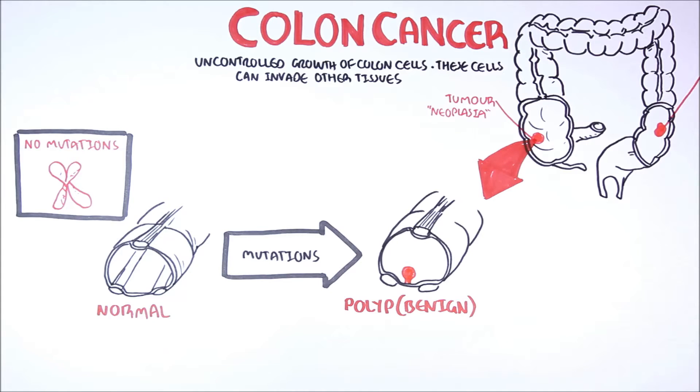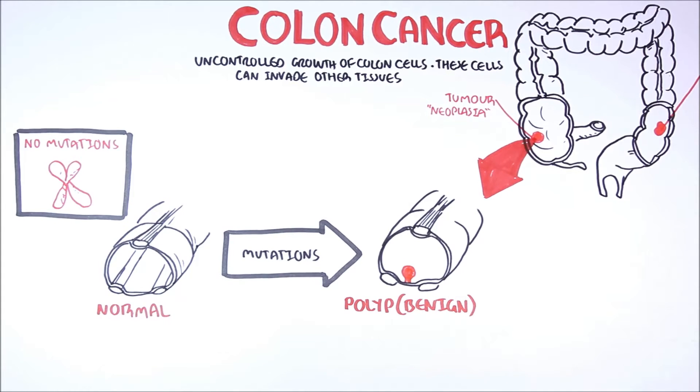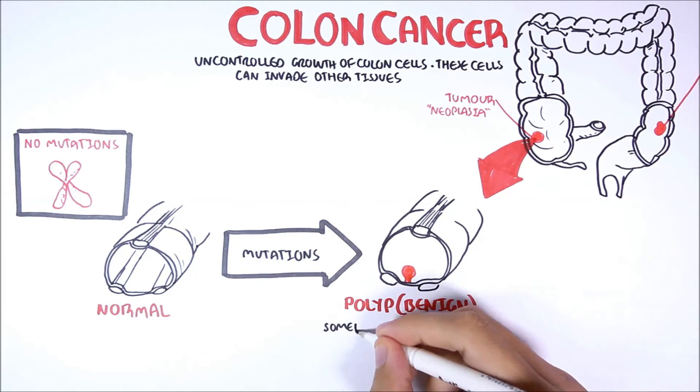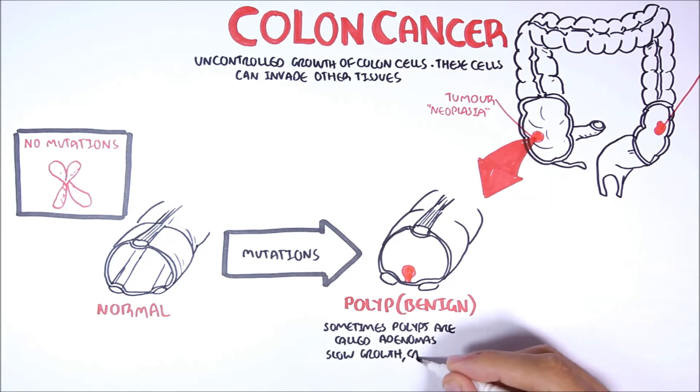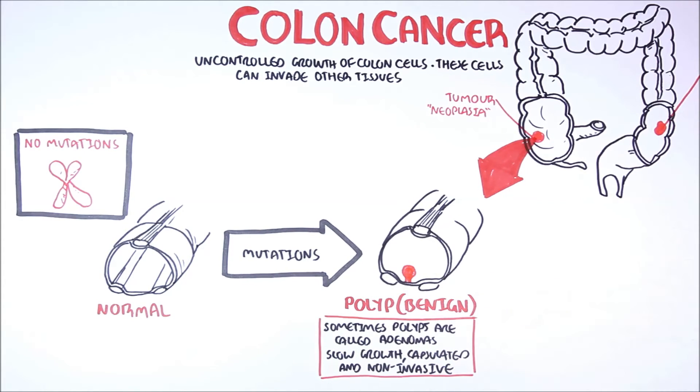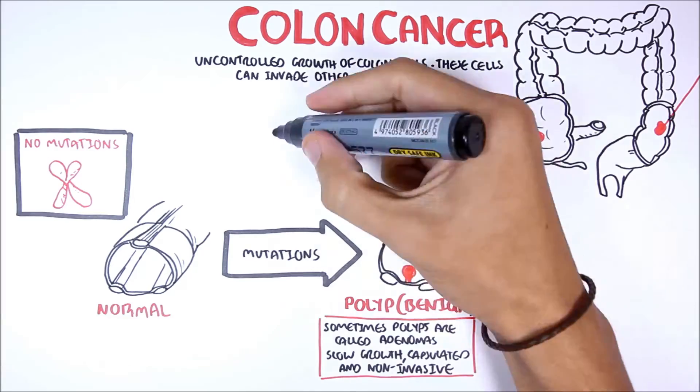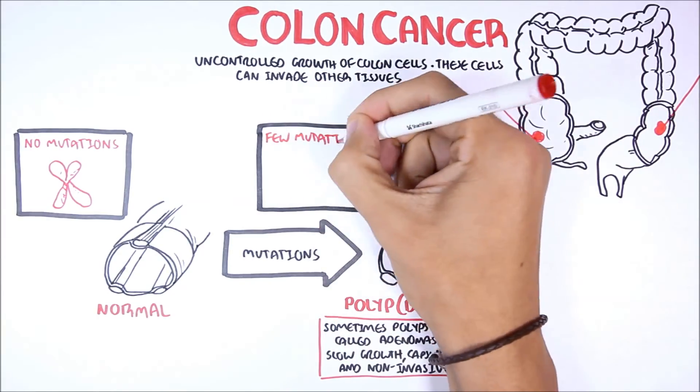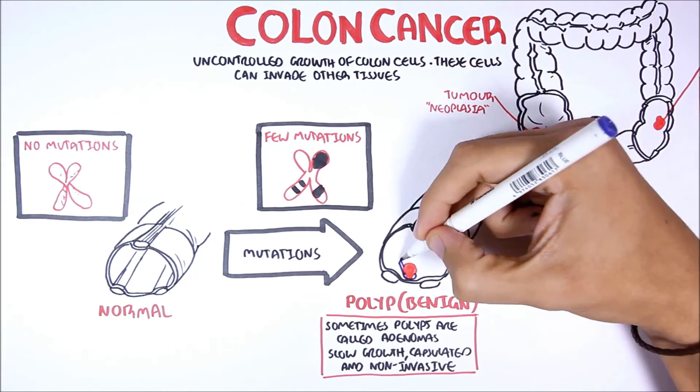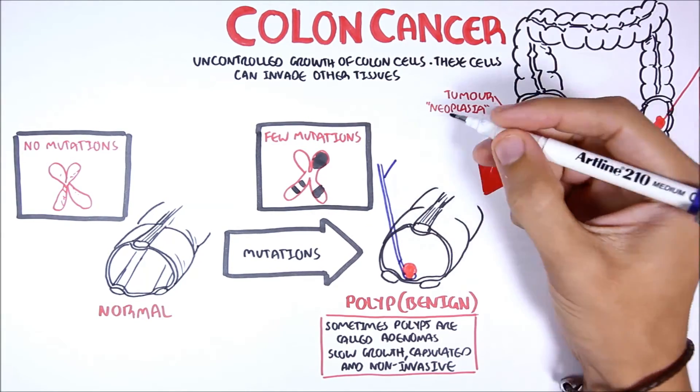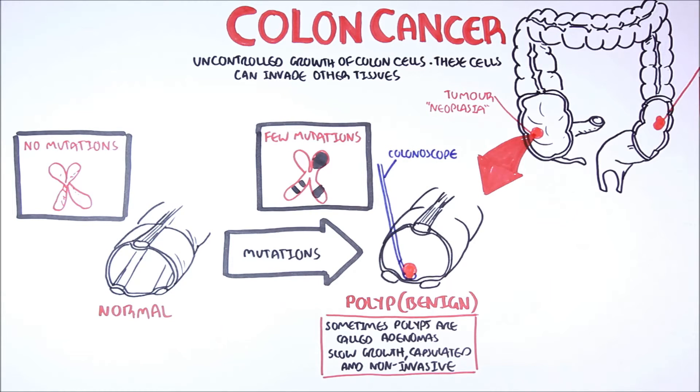A polyp is a tumor, but it is not cancerous because it is benign. Sometimes polyps are called adenomas if they are big enough. Polyps are slow-growing, capsulated, and non-invasive. A polyp develops because of possible mutations in the DNA that give rise to them. Usually, people undergo surgery called colonoscopy to remove these polyps in case they are or can become cancerous.